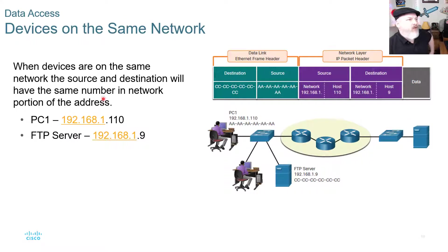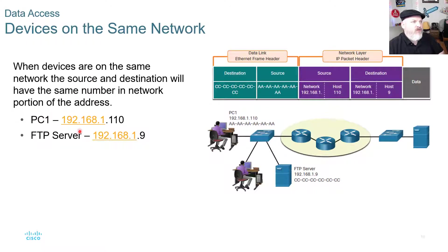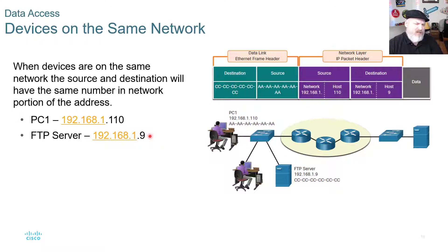When devices are on the same network, the source and destination will have the same number in the network portion of the address. For example, PC1 has 192.168.1.x and the FTP server has 192.168.1.x — they're on the same network with different host portions but the same network portion. That's where subnetting with IPv4 comes in.